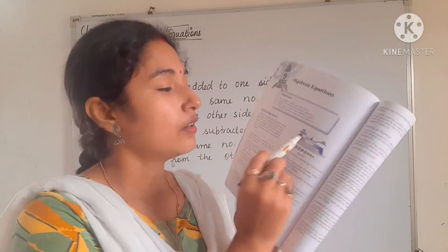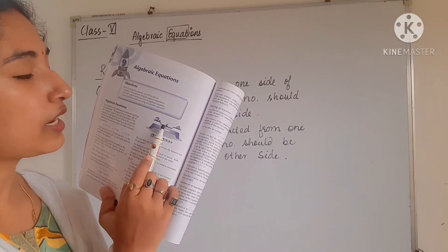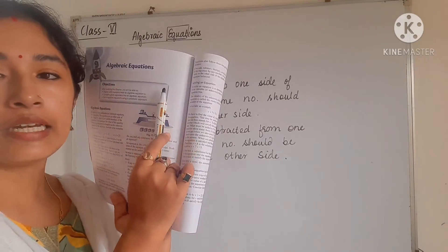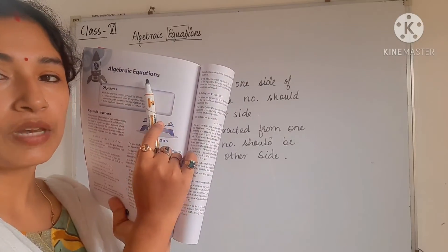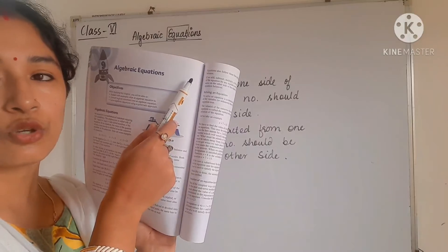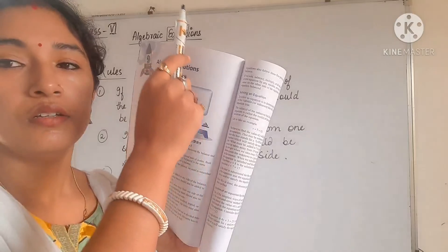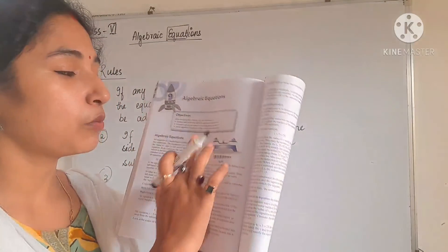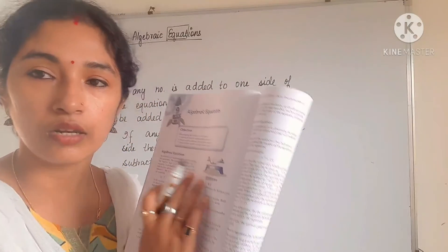In that balance diagram, the weight on the left hand side and right hand side should be equal so that the middle arrow points exactly upward at 90 degrees — not tilted to either side. Only when the arrow is straight upward are both sides in a balanced condition, meaning both sides are equal.